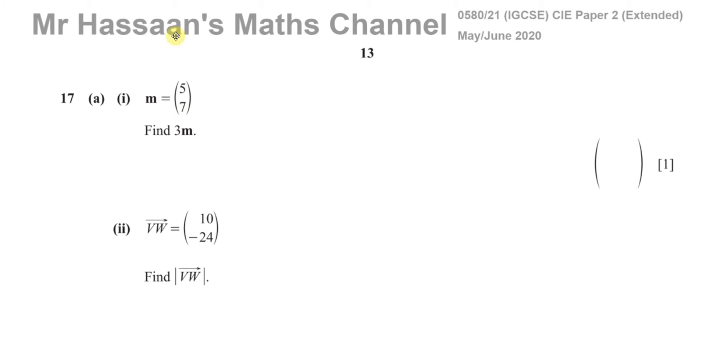Welcome back, this is Mr. Hassan's Maths Channel and we are now answering question number 17 from paper 2, variant 1 from May/June 2020 for the IGCSE Cambridge exam. This question is about vectors, question 17a part 1, pretty simple.